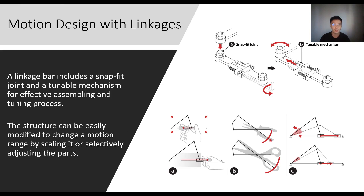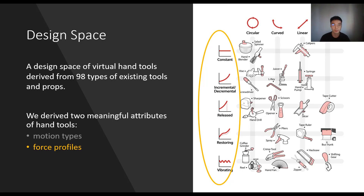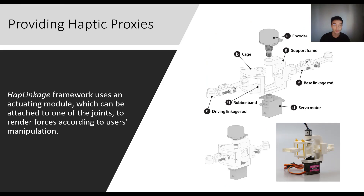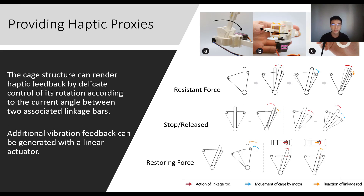A linkage bar includes a snap-fit joint and a turnable mechanism for effective assembling and turning. The structure can be easily modified to change the motion range by scaling it or selectively adjusting the parts. We also provide different force profiles. The HyperLinkage framework uses an actuating module which can be attached to one of the joints to render forces according to the user's manipulation. The cage structure can render haptic feedback by delicate control of its rotation according to the current angle between two associated linkage bars.